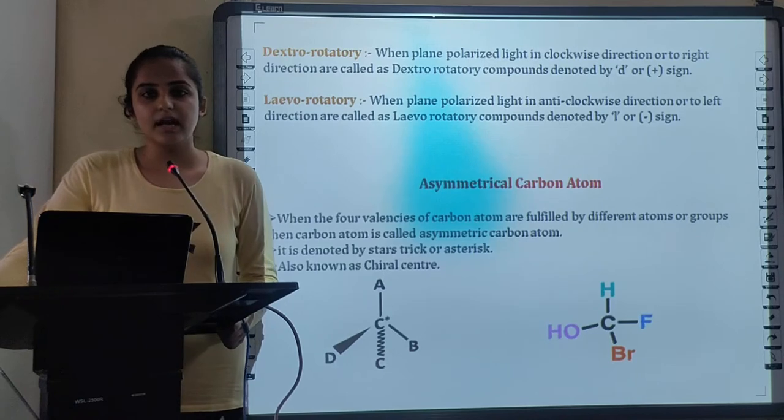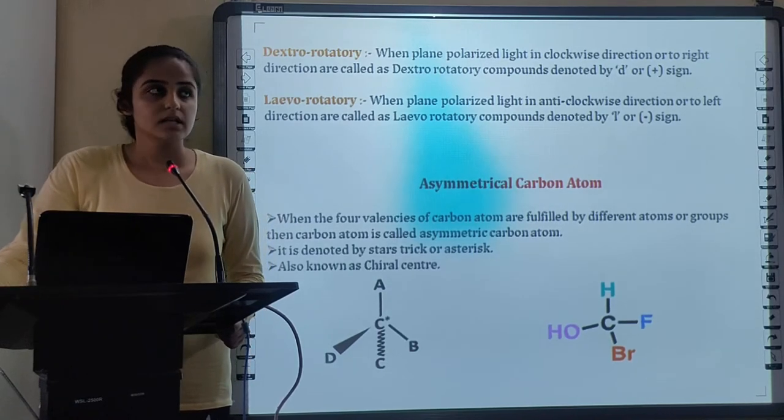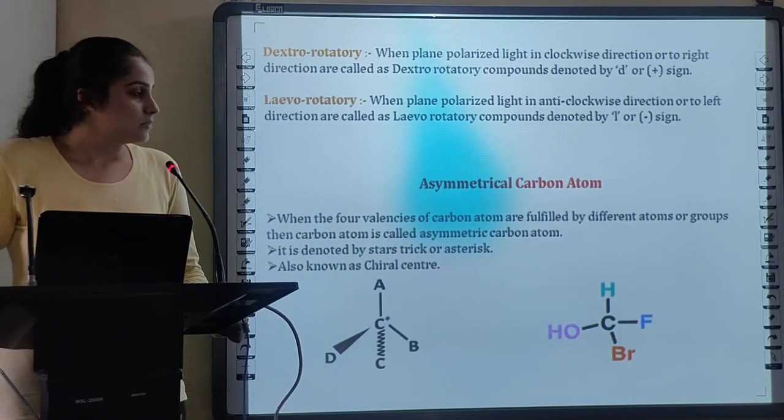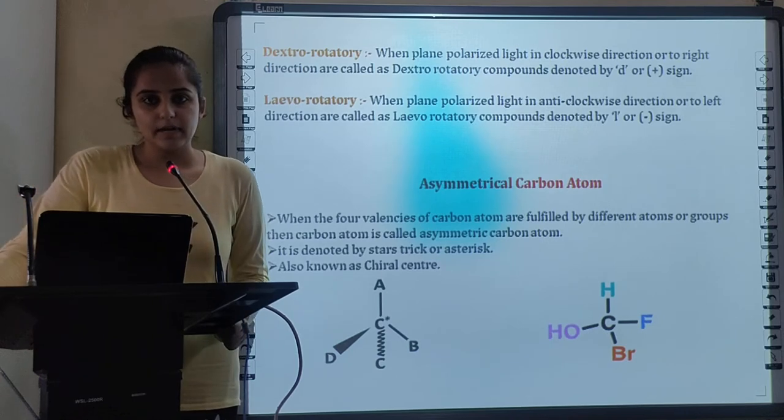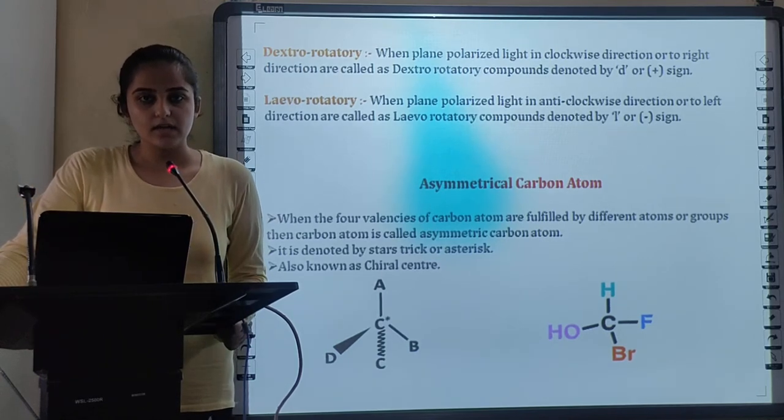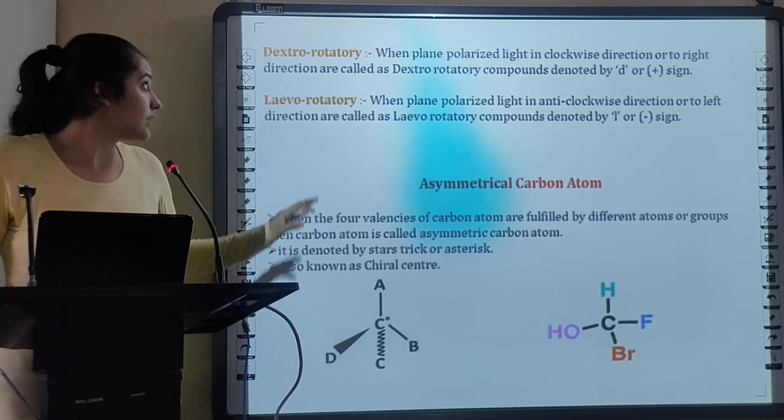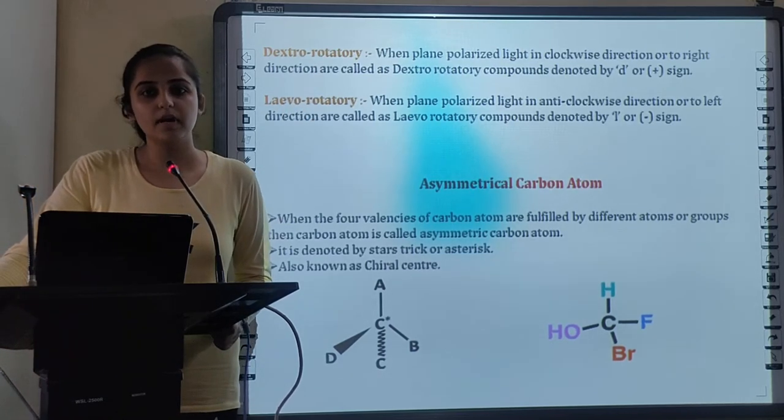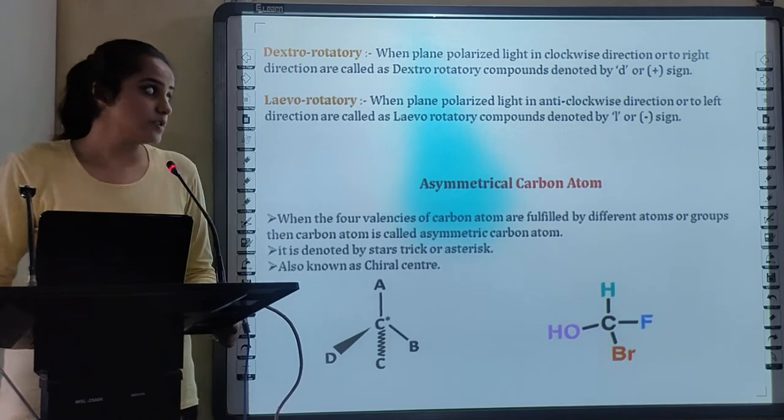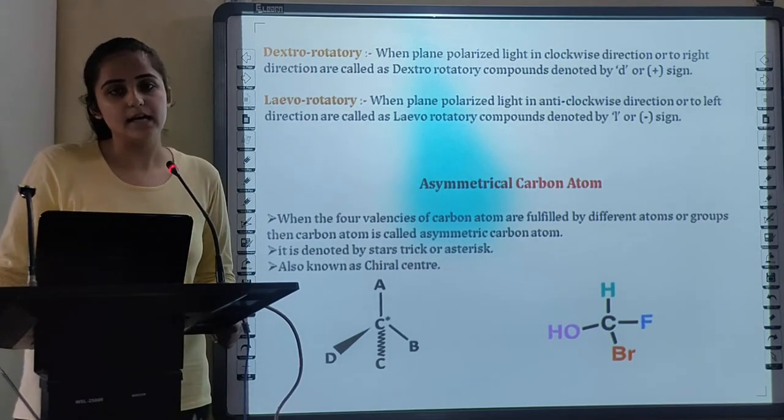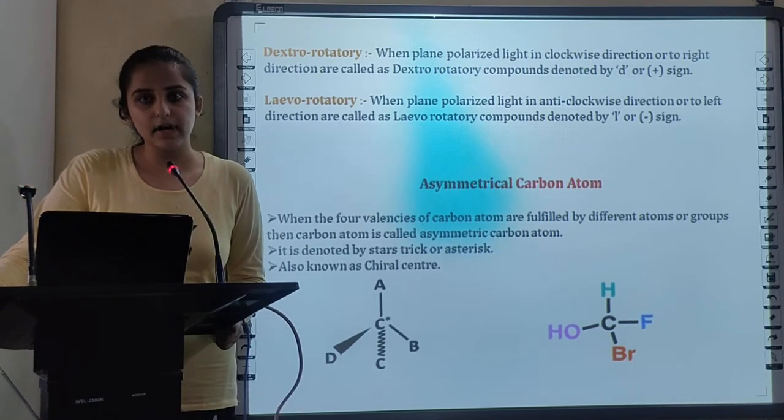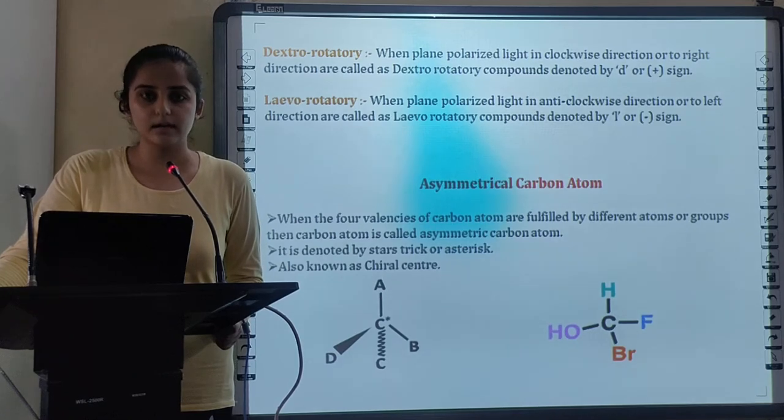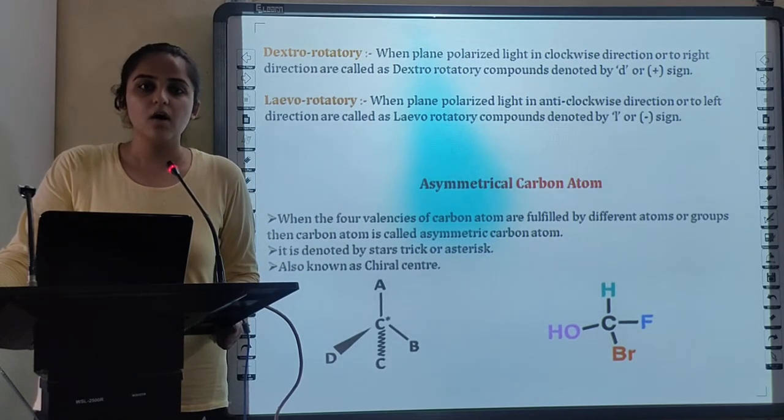Next are Dextro Rotatory and Levo Rotatory Compounds. The compounds which rotate the plane of plane polarized light in clockwise direction or to the right direction are called as Dextro Rotatory Compounds and are denoted with small d or plus sign. Whereas the compounds which rotate the plane polarized light in anticlockwise direction or in the left direction are called as Levo Rotatory Compounds denoted with small l or minus sign.